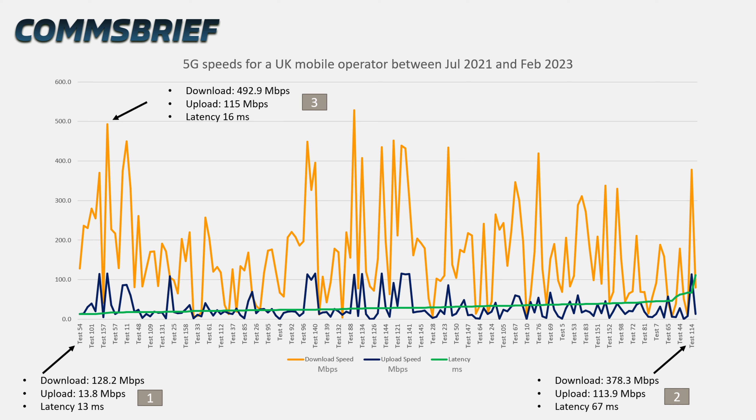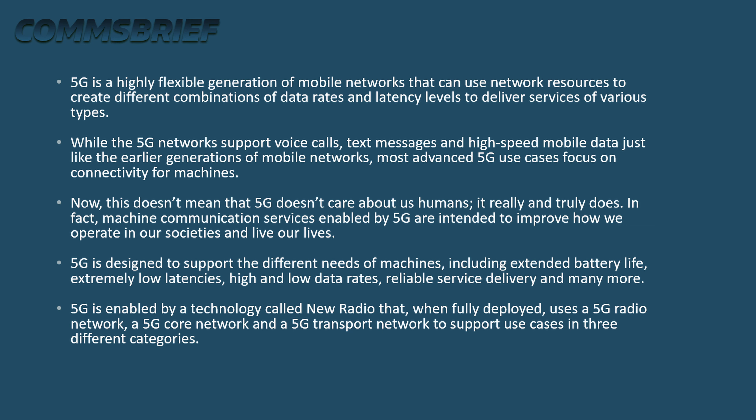They are independent — meaning it is possible to achieve very low latencies even if your data rates are not high. So if you're a gamer, the readings you want are on the left side of this graph where the latencies are at the lowest. 5G is a highly flexible generation of mobile networks that can use network resources to create different combinations of data rates and latency levels to deliver services of various types.